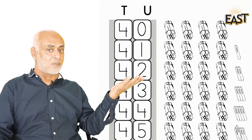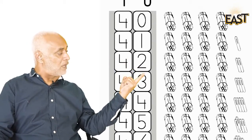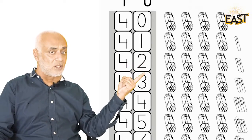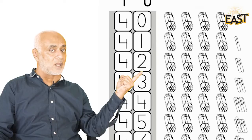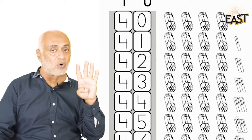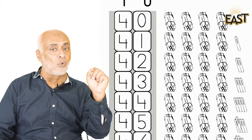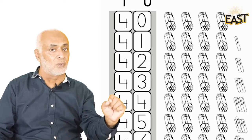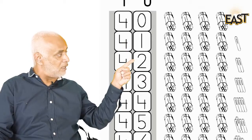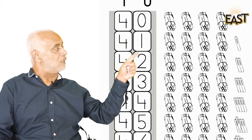Should we move on? The next is four tens, one, two, three, and four, and how many units? One and two. So four tens and two are forty-two.